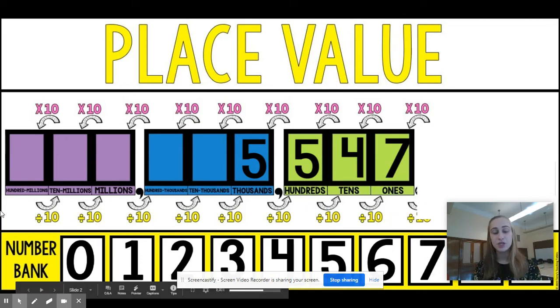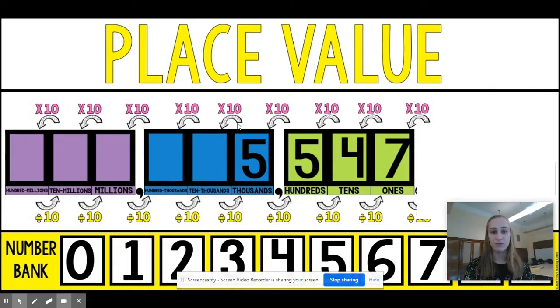I'm going to be reviewing the relationships between digits that are the same in a number. So the example we have here is the number 5,547.